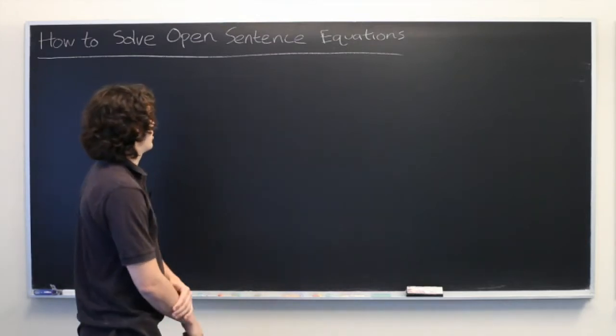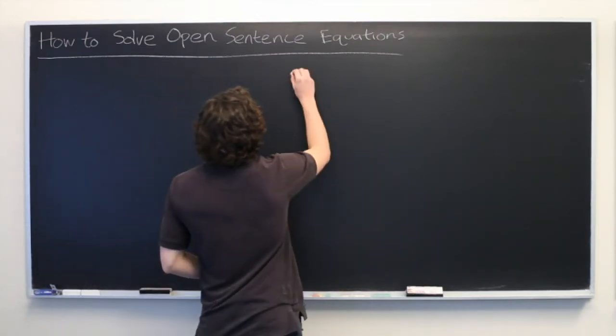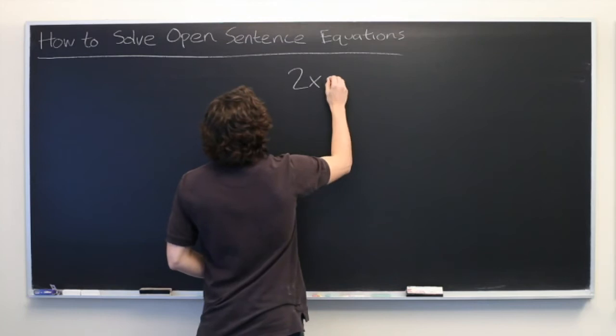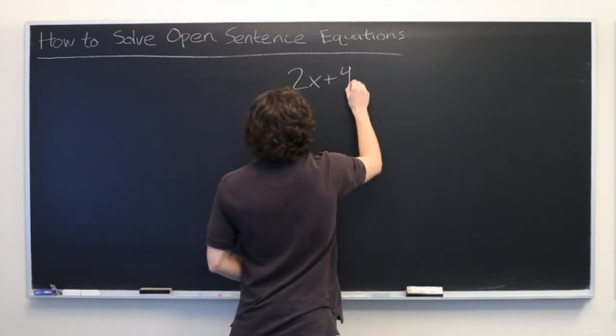First, let's give ourselves an open sentence equation to work with. About 2x plus 4 equals 8.